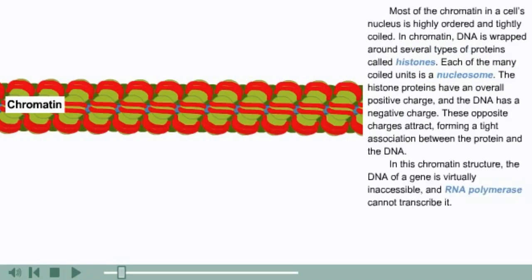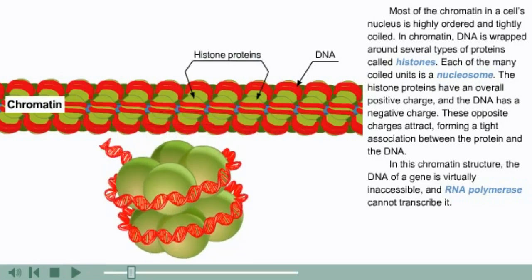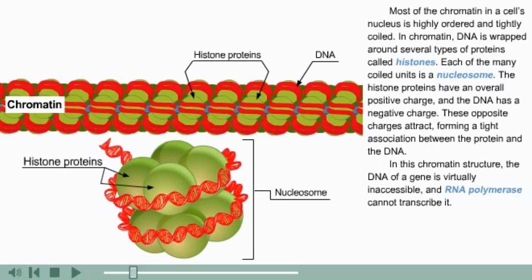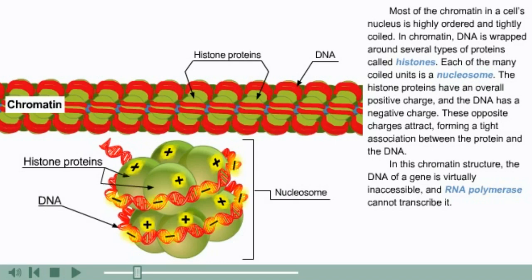Most of the chromatin in a cell's nucleus is highly ordered and tightly coiled. In chromatin, DNA is wrapped around several types of proteins called histones. Each of the many coiled units is a nucleosome. The histone proteins have an overall positive charge, and the DNA has a negative charge. These opposite charges attract, forming a tight association between the protein and the DNA. In this chromatin structure, the DNA of a gene is virtually inaccessible, and RNA polymerase cannot transcribe it.